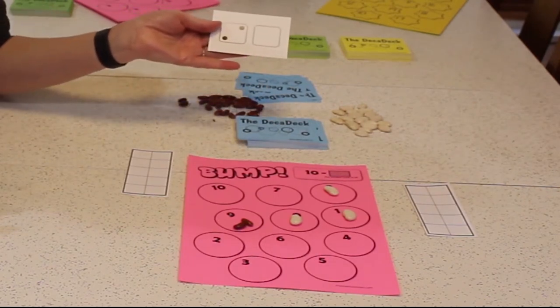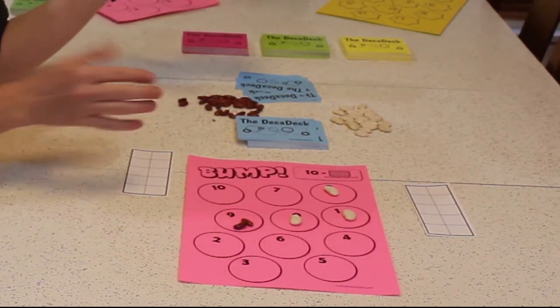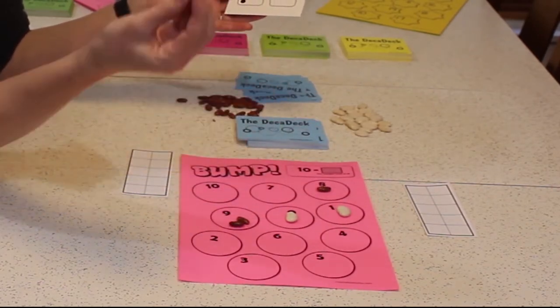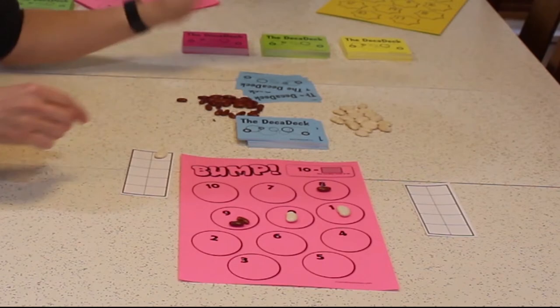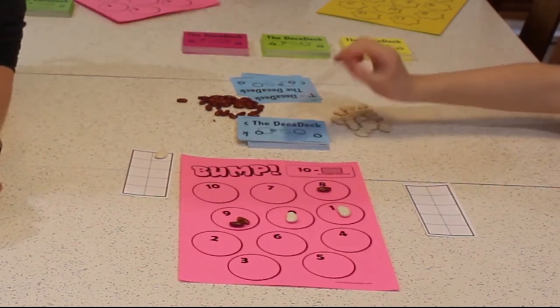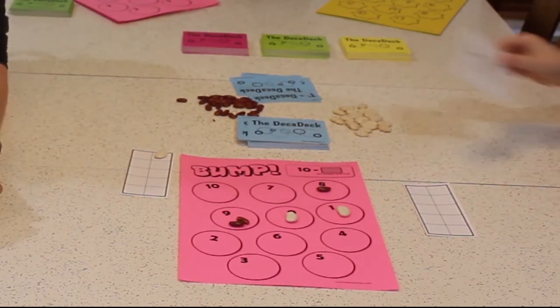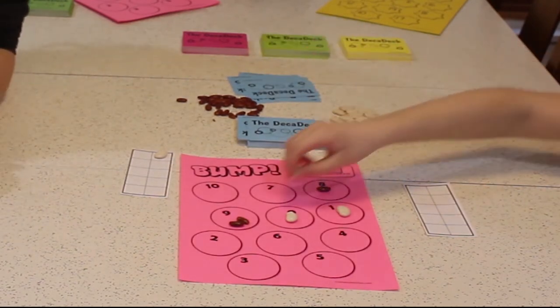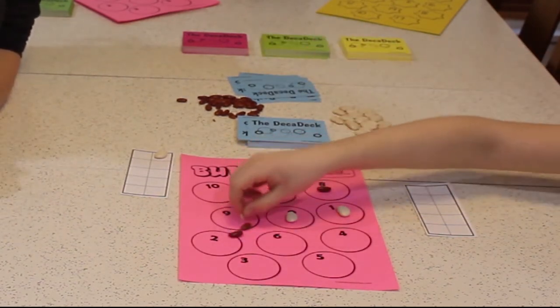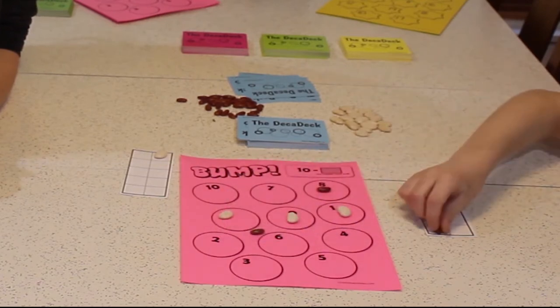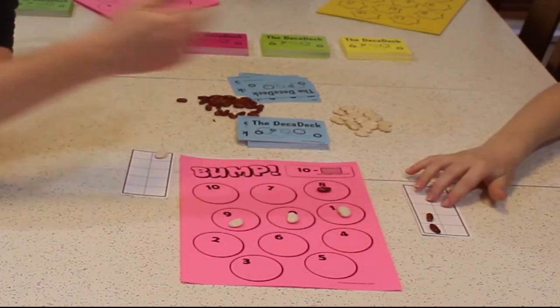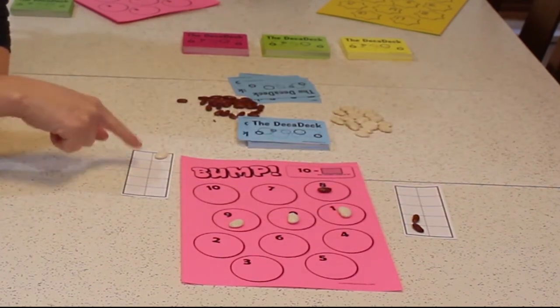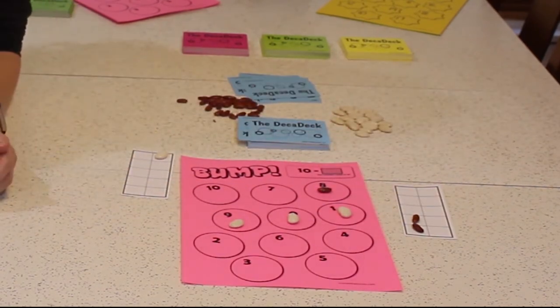Okay. 10 minus 9 is 1, so I'll put a Bean on the 1. 10 minus 2 is 8. Oh, this means that I get to bump off your Lima Bean, and this becomes my first point. 10 minus 1, so I get to bump those off. You've got both of them off, and now you have two points. You only need 8 more to win the game, and I need 9 more to win the game.